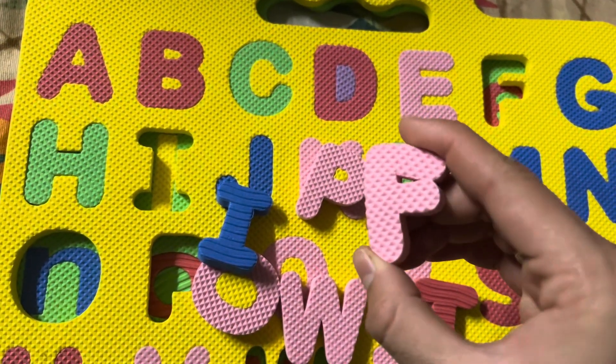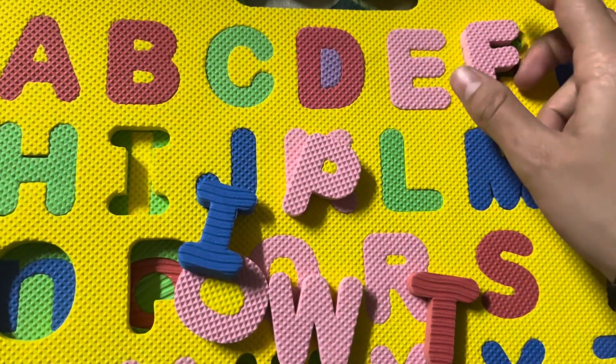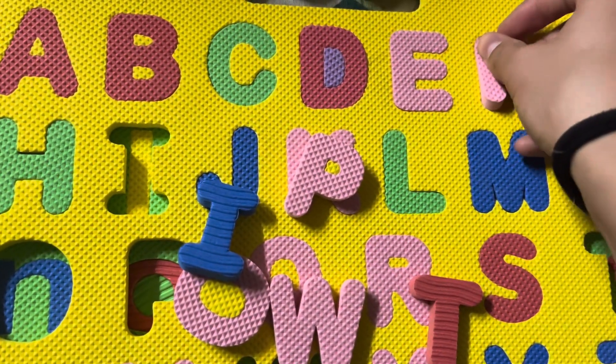The next one is, which alphabet is it? F. F for fish, F for frog.